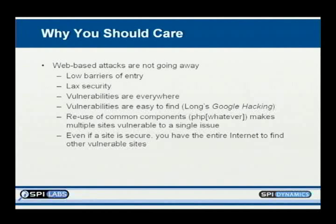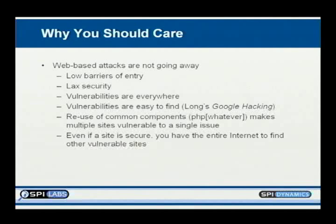Whenever you reuse a common component — say I like photography so I grab forum software from SourceForge — I'm trusting the people who wrote that software. If something like PHP BB is used on hundreds or thousands of sites and I find a vulnerability in one, I haven't just attacked one host — I've attacked everybody who's used that component. The return on investment of attacking a website is high because finding a flaw in a common component means you've found how to attack thousands of websites simultaneously. And Google facilitates finding your next target if one site is secure.